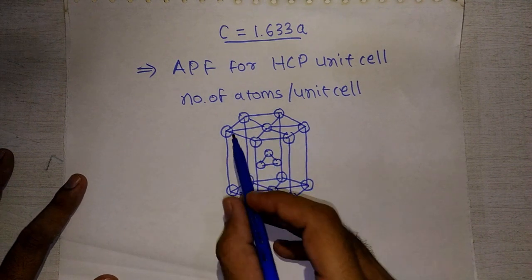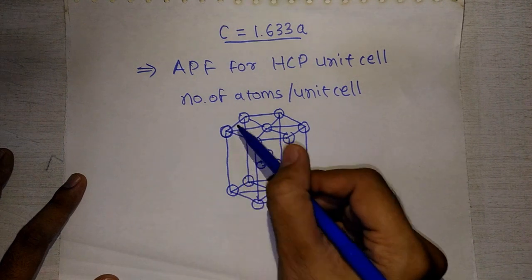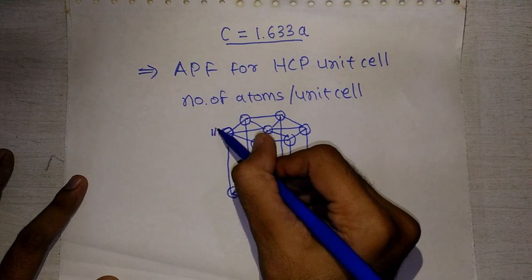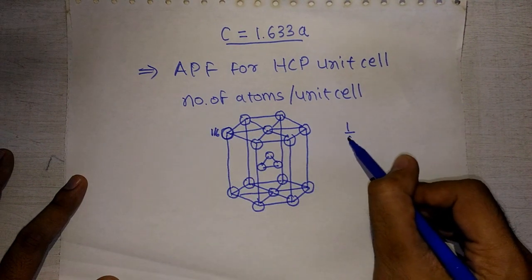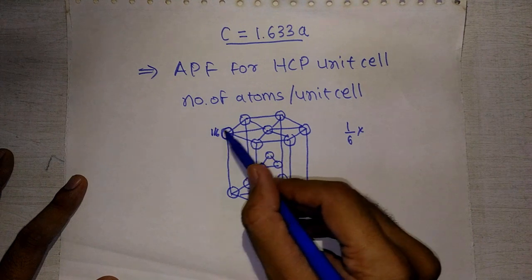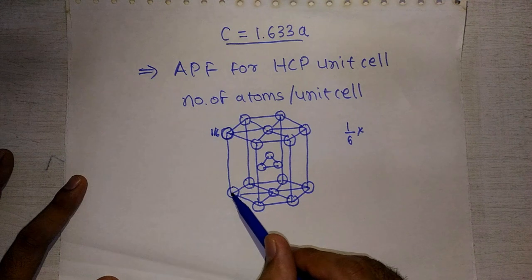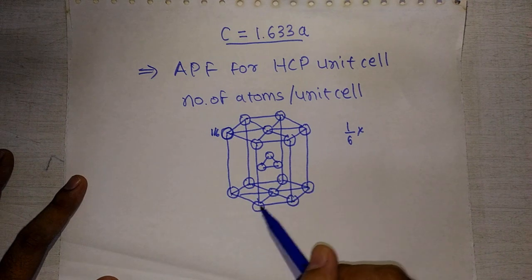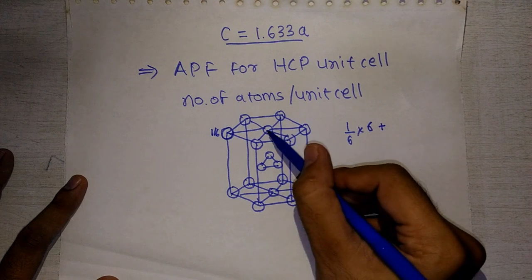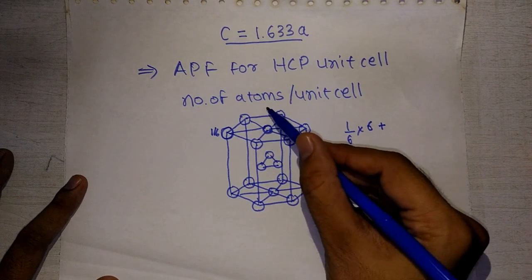We have already seen that each corner atom is shared by 6 unit cells, so it contributes 1/6. We have 12 such corner atoms in total — 6 on the top face and 6 on the bottom face. So the contribution from corner atoms is 1/6 × 12.